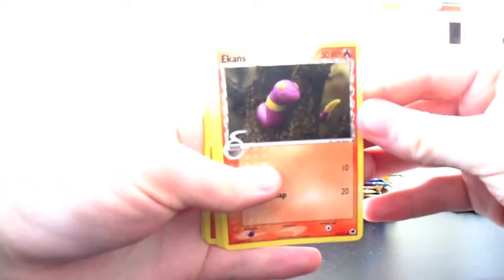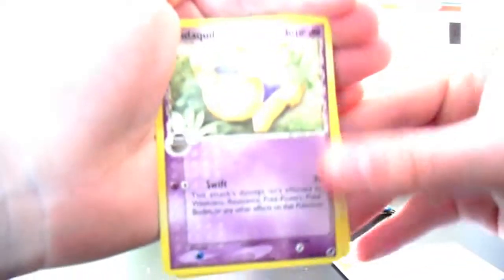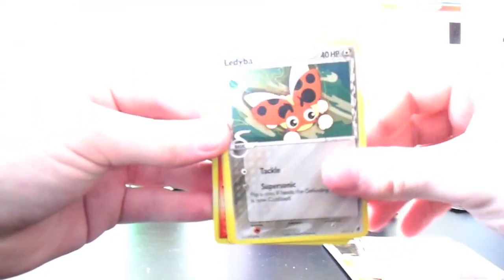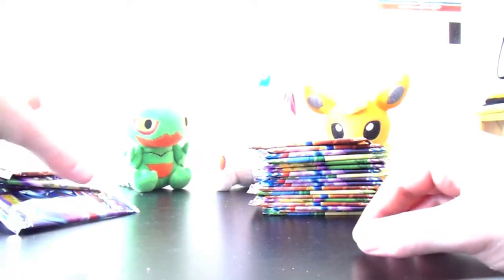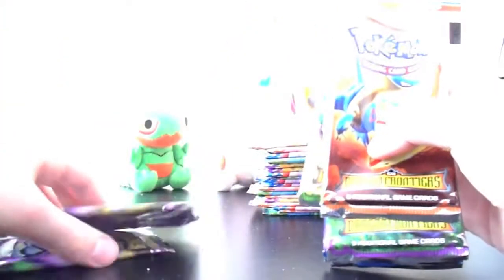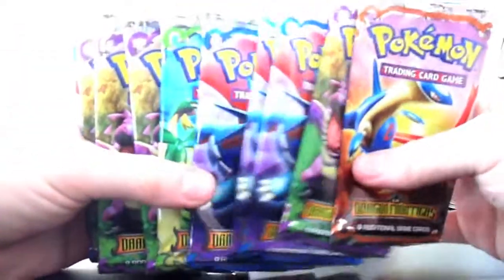The last pack of this part. Latios and Latias. We got Ekans, Swablu, Cyndaquil. I haven't got too many of those ones. Ledyba. Trapinch. Swellow uncommon reverse holo. And a Gligar. Mr. Stone's Project. And Croconaw. So thanks a lot for watching part one guys. It was absolutely amazing. I can't have asked for a better part of EX Dragon Frontiers from these 36 blister packs. So cool. Thanks a lot for watching guys and stay tuned for part two. See ya.